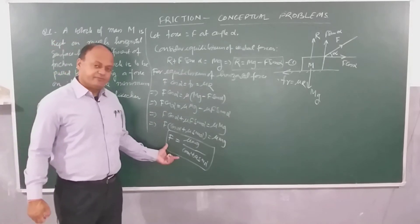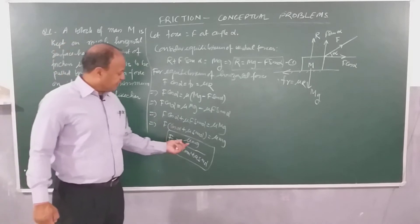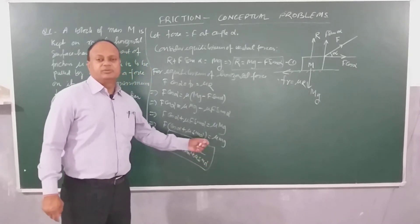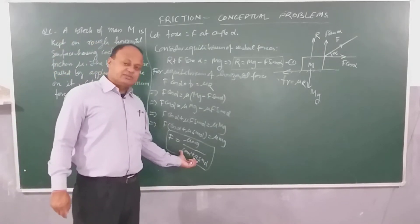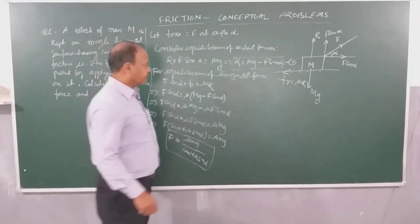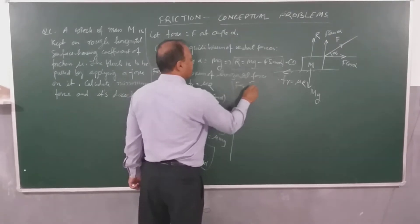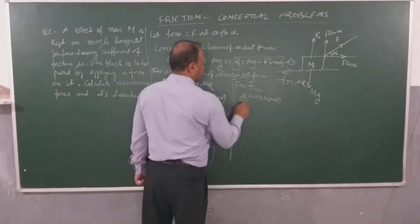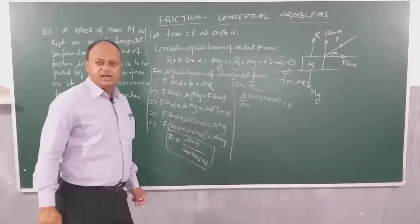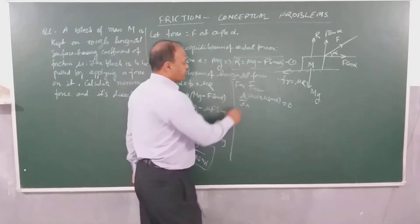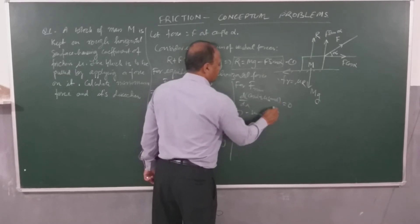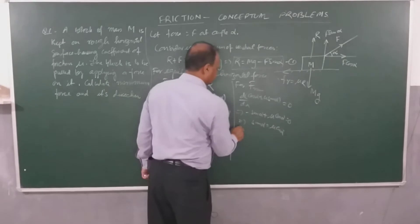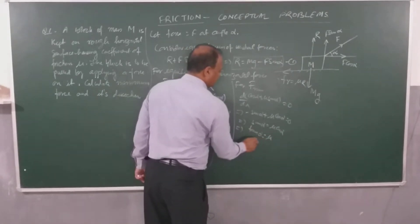This is the value of F, but the question asks for the minimum value of F. I cannot change mu, and mg is already given. For minimizing F, the denominator must be maximum. For F minimum, the derivative of (cos alpha plus mu·sin alpha) with respect to alpha should equal zero. Derivative of cos alpha is minus sin alpha, and mu times derivative of sin alpha is cos alpha, set equal to zero. So sin alpha equals mu·cos alpha, meaning tan alpha equals mu, or alpha equals tan inverse of mu.